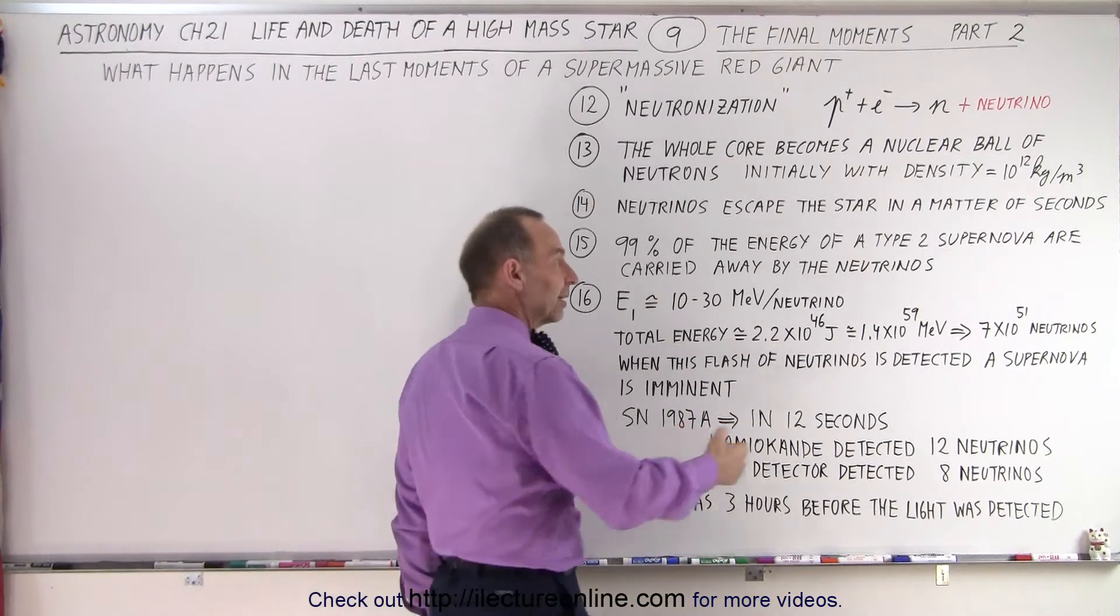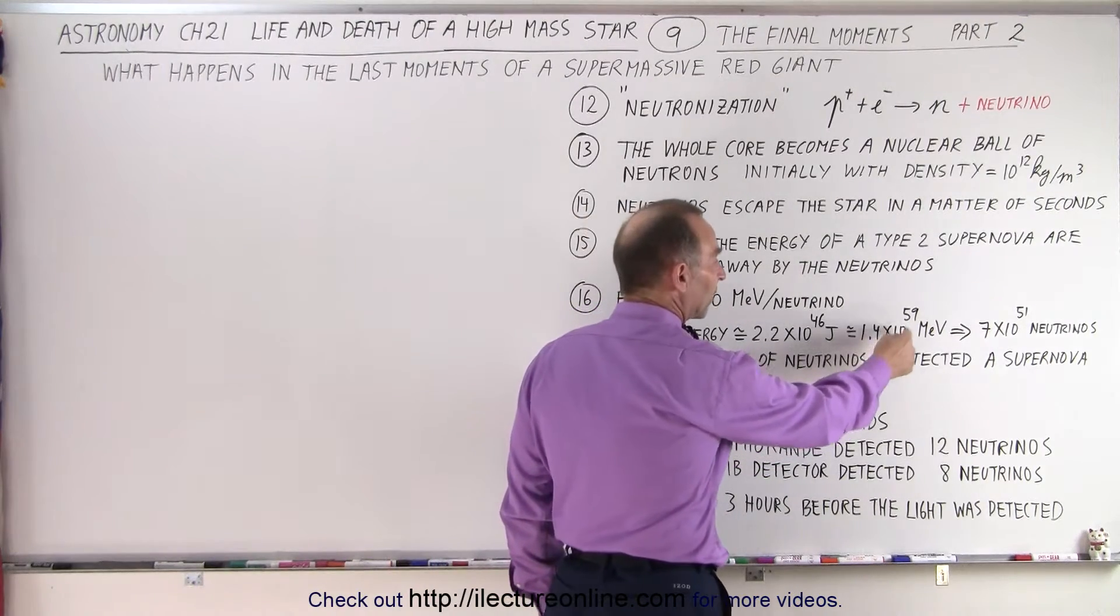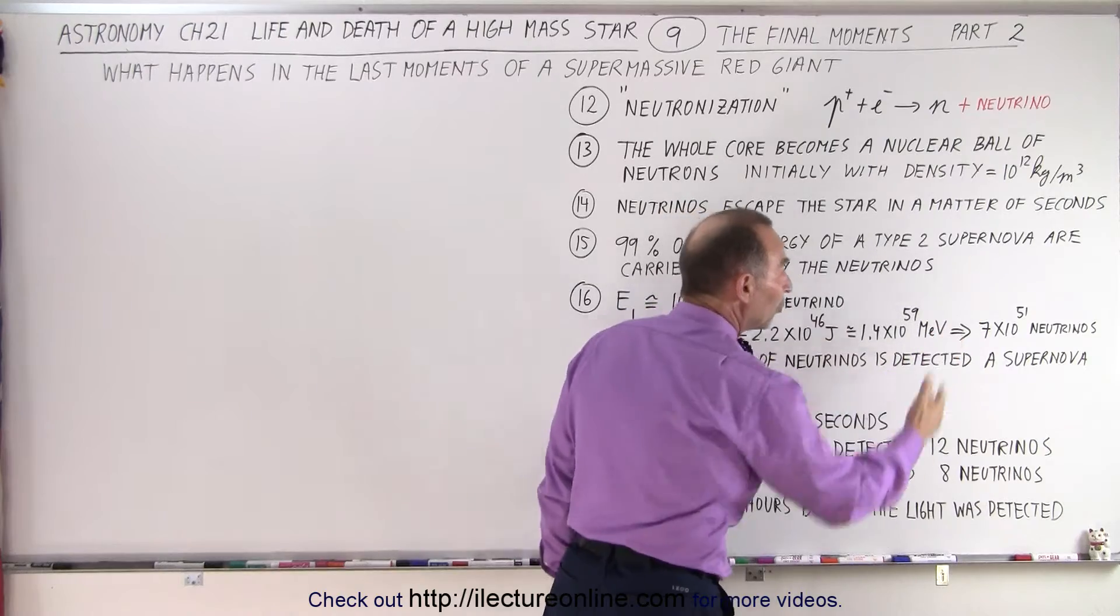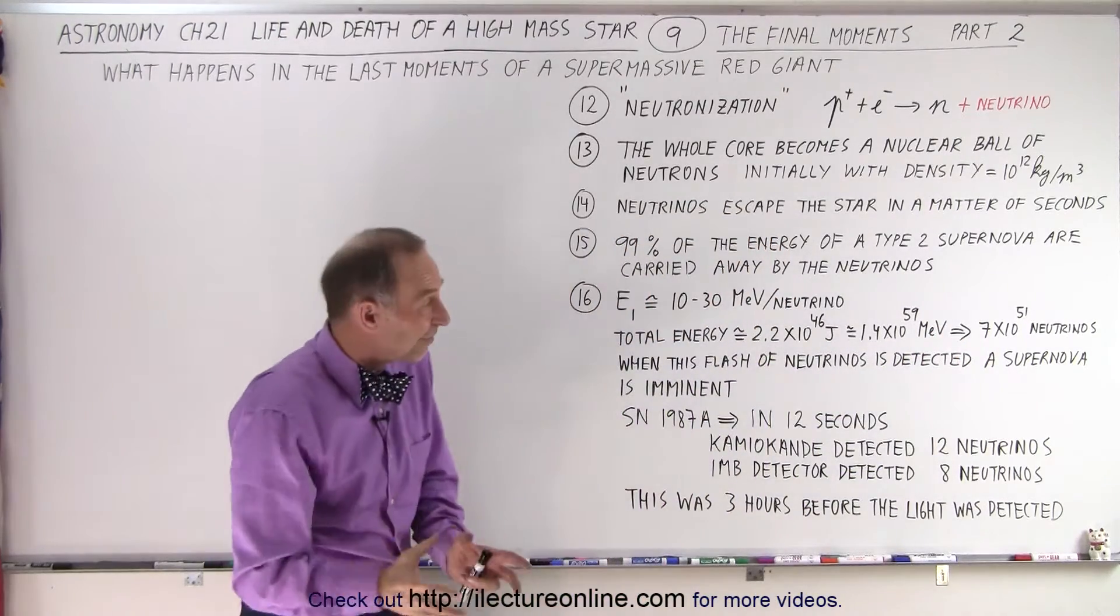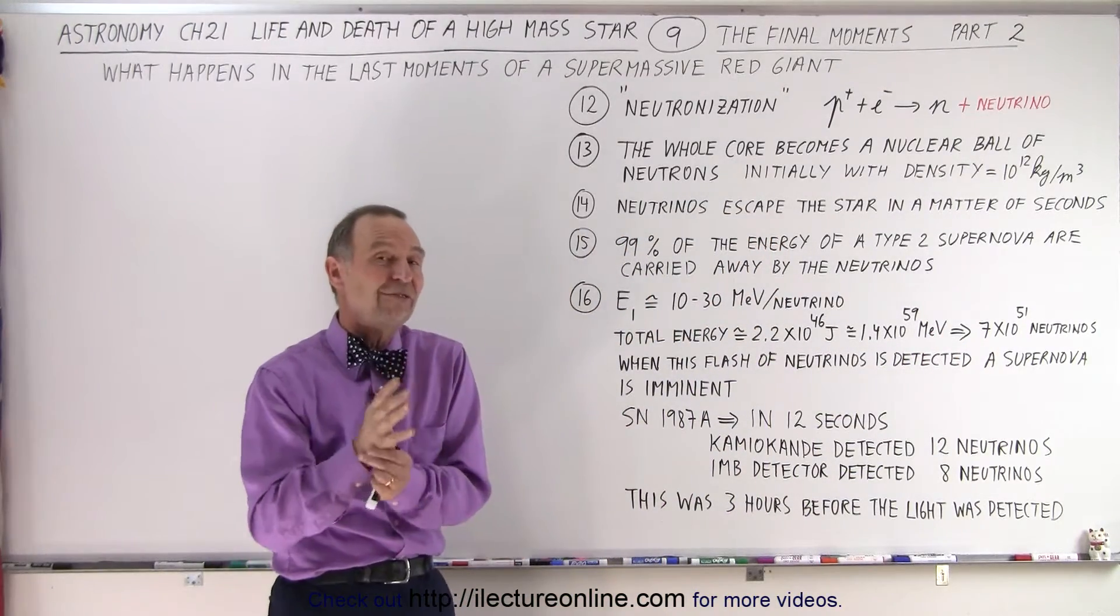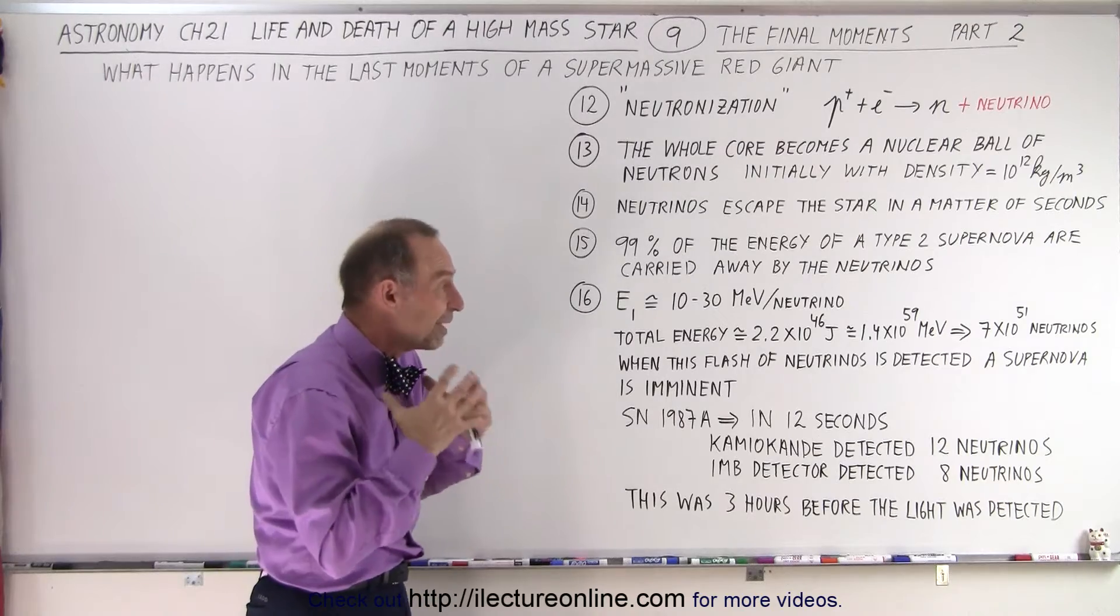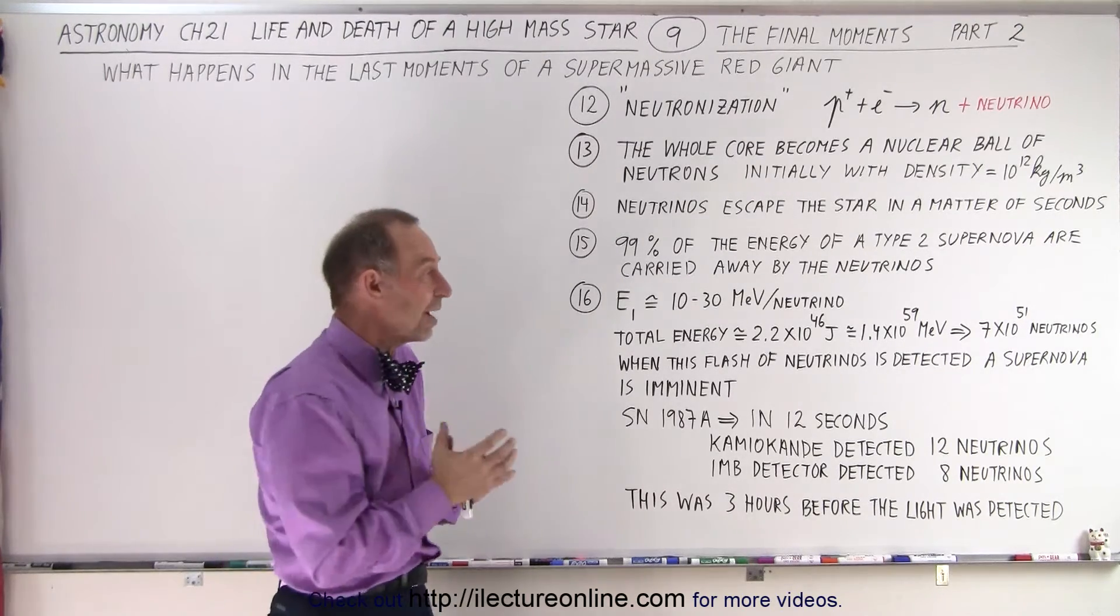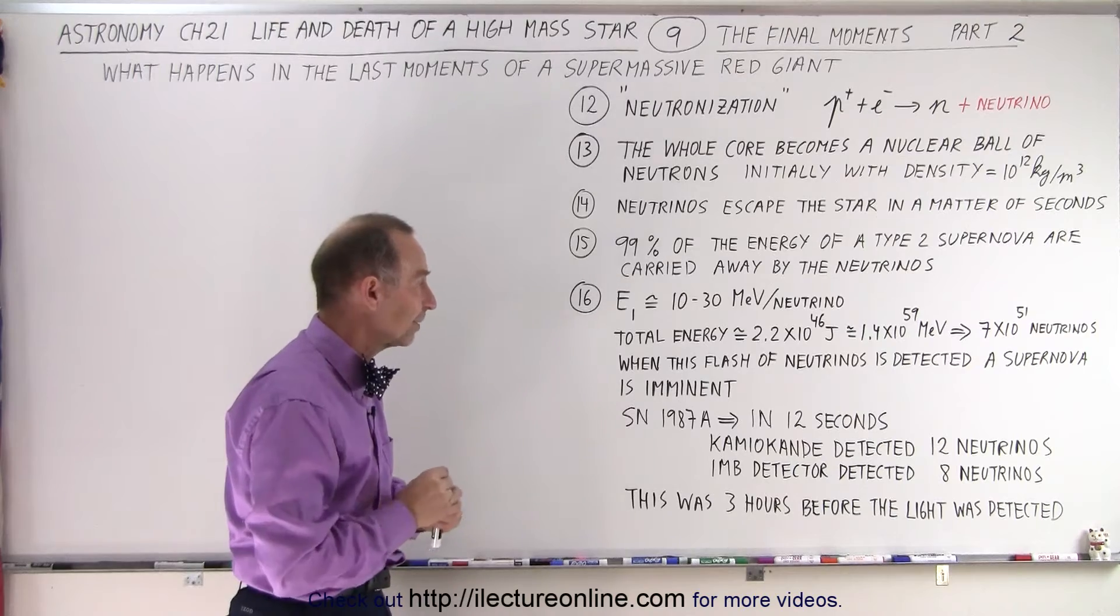Converted to million electron volts is about 1.4 times 10 to the 59 electron volts. So, we can calculate that about 7 times 10 to the 51 neutrinos are being formed in that very tiny amount of time. Very short fraction of a second.